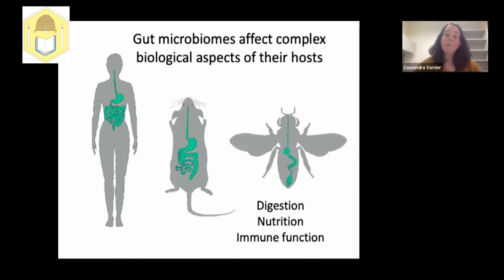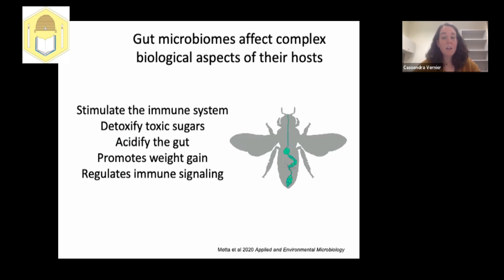For decades, gut microbiomes have been known to function in health-related aspects of their hosts, including roles in digestion, nutrition, and immune function. In mammals, microbiomes play a role in immune system development, help prevent pathogen invasion, and disruption of the microbiome results in autoimmune diseases and disorders such as irritable bowel syndrome and Crohn's disease. In the honeybee, certain components of the microbiome are involved in priming the immune system and metabolizing sugars — including mannose, arabinose, xylose, and rhamnose — that honeybees cannot digest themselves, all found in natural nectar.